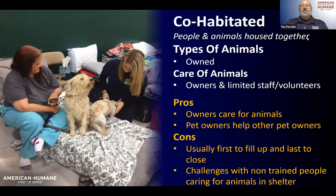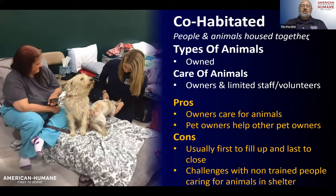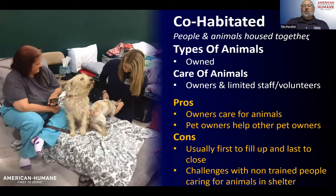People want to be with their pets, so if they have the option to be in a co-habitated shelter they'll go there first, filling up before other shelter types. They're also often the last to close because it can be hard for displaced people to find housing, so you need to have a plan for that.